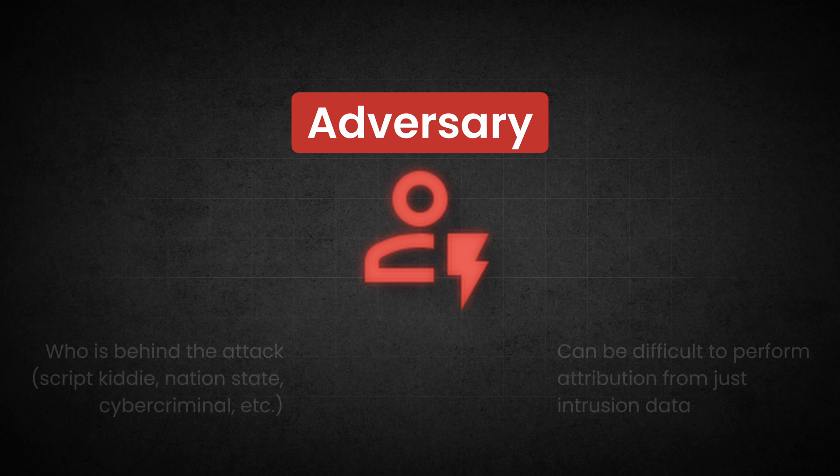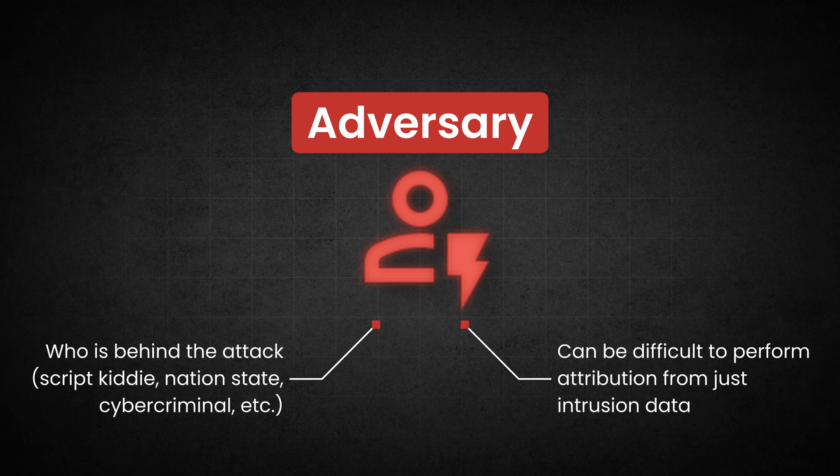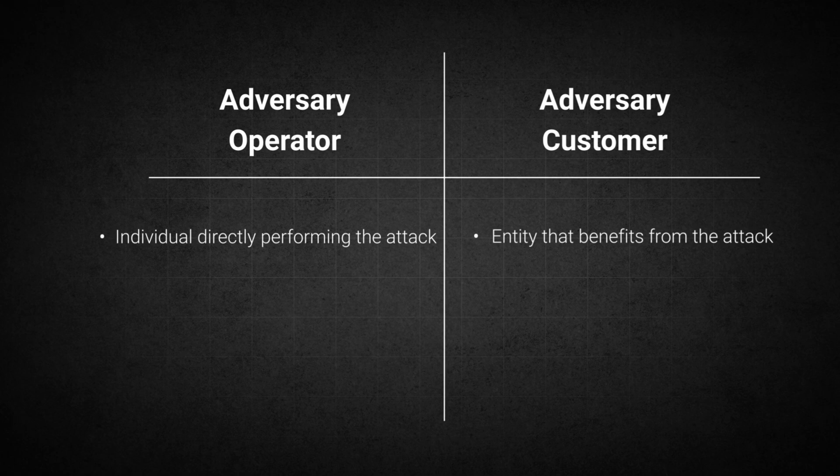The adversary is who is behind an attack — it could be a nation state, script kiddie, or cyber criminal. You can break the adversary down into two main roles: the adversary operator, who is the individual directly performing the attack, and the adversary customer, the entity that benefits from the attack. A high profile cyber attack will typically involve multiple operational teams — one for initial access, another for developing the malware, and a third for exfiltrating the data.